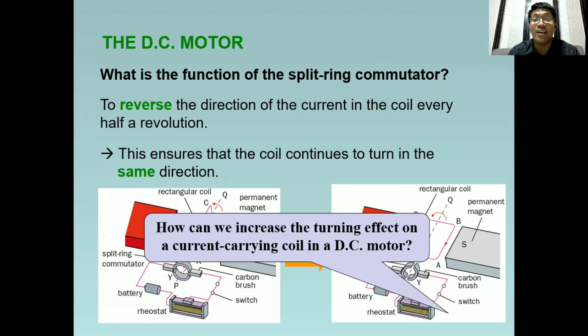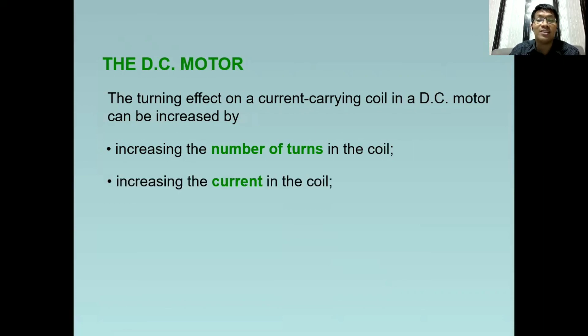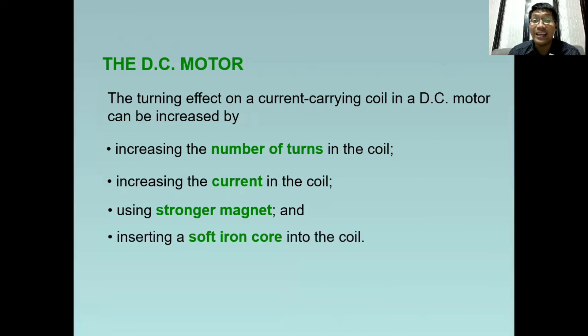How can we increase the turning effect on a current carrying coil in a DC motor? We have several ways to improve the turning effect. First, we can increase the number of turns in the coil - the more we add, the higher the turning effect. Next, we can increase the current in the coil. Also, we can use stronger magnets. And lastly, we can insert a soft iron core into the coil. Through these methods, we can increase the turning effect in DC motors of our appliances and battery operated toys.